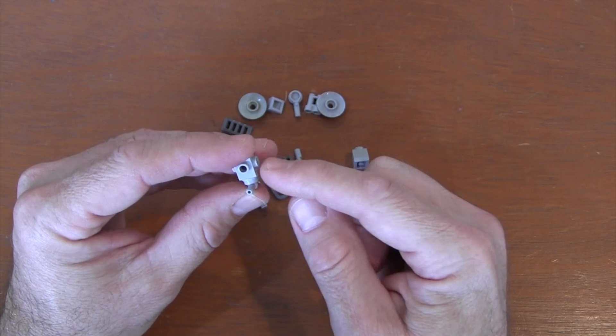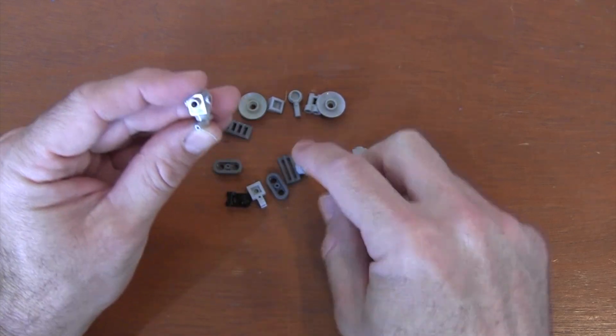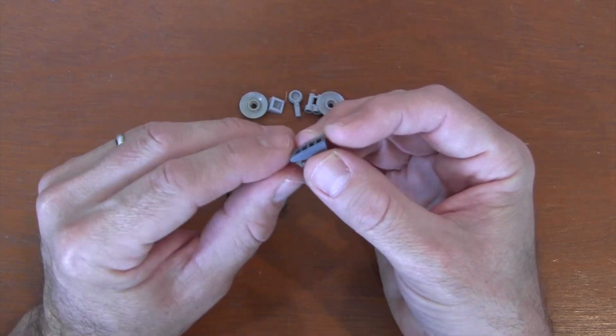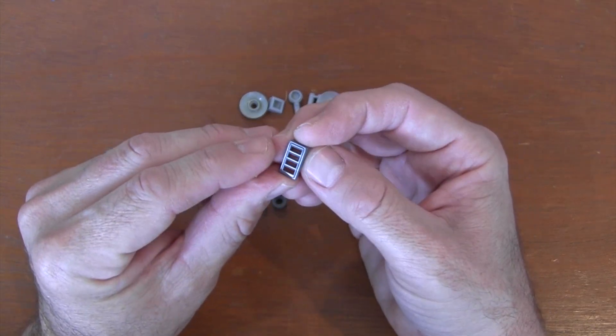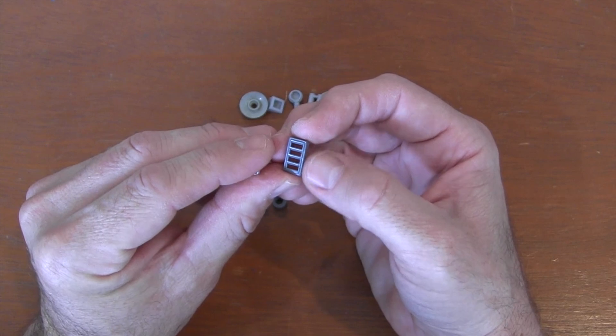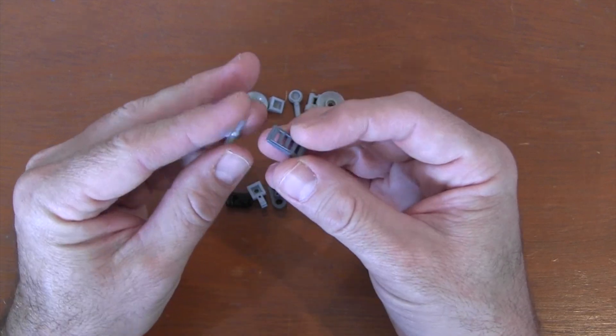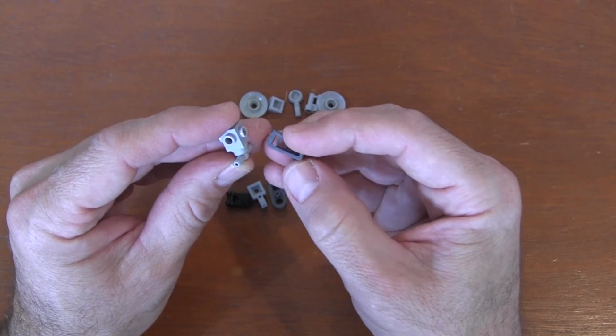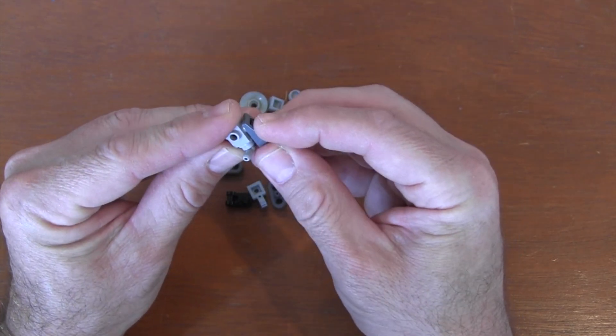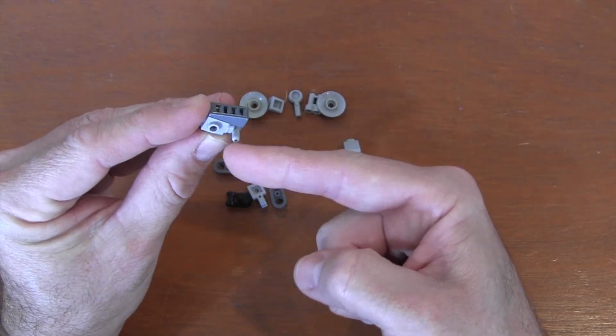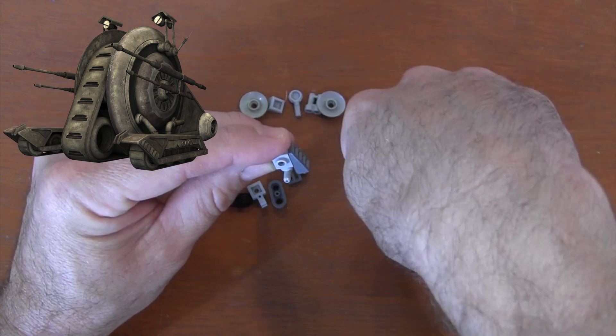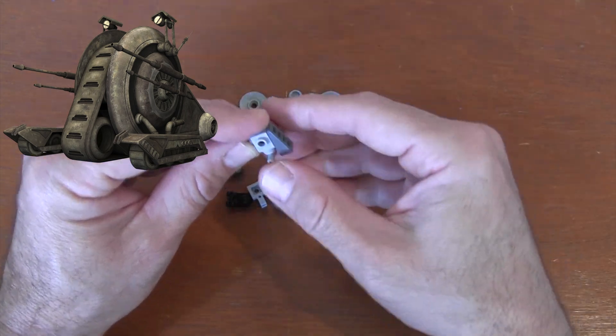This will be the front of my droid tank. For the front treads, I'm going to grab a two-by-one slope piece with grill pattern. I'll put the thin end of this slope on the front stud of the Travis brick, so it slopes over that T-bar on the bottom. This makes it look like the treads are rolling forward around the droid tank.